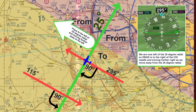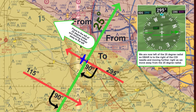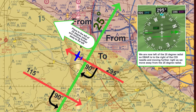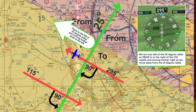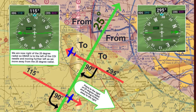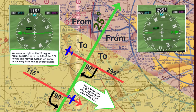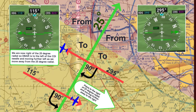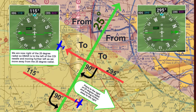For the flight heading west, I am now on the left side of the 25-degree radial, so the D-bar is now deviating further and further to the right of the 25-degree course, because I am on the left side of the course and getting further away to the left. For the flight heading east, I am now on the right side of the 25-degree radial, and the D-bar is deviating further and further to the left, meaning I am on the right side of the course and getting further away to the right.